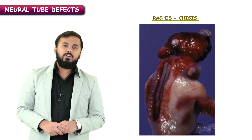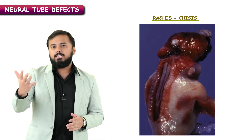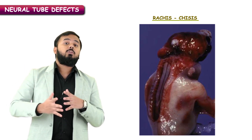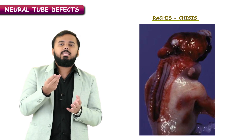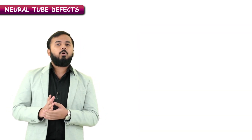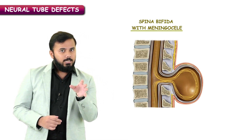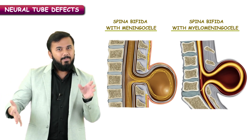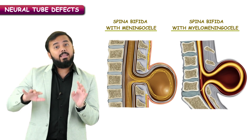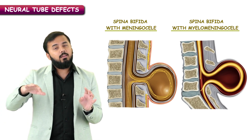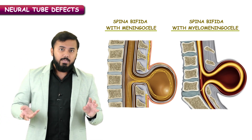You can see the picture of rachischisis here — there is an open vertebra, open spinal cord, and you can even see the shininess, which is the leakage of CSF. It is very important to differentiate between spina bifida with meningocele and spina bifida with myelomeningocele. In meningocele, only the meninges are protruding out. In myelomeningocele, both the spinal cord as well as the meninges are protruding out.